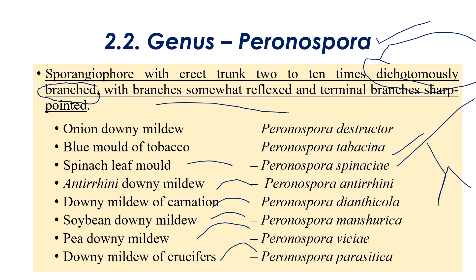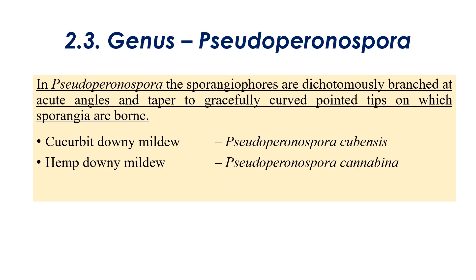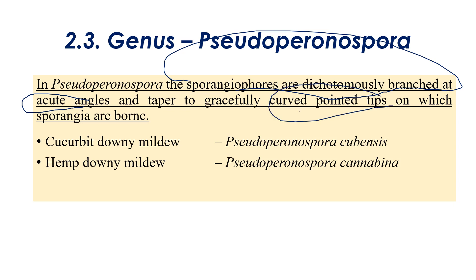The next genus is Pseudoperonospora. The special sporangiophore character: sporangiophores are dichotomously branched at acute angle, and the tips are curved or pointed. Best examples: cucurbits downy mildew — Pseudoperonospora cubensis; hemp downy mildew — Pseudoperonospora cannabina.